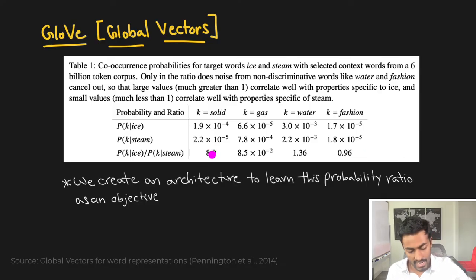What we can see here is that solid has a very high probability ratio and so it is more associated with ice. Gas has a low probability ratio closer to zero and hence it is more associated with steam. And then water and fashion are kind of in the center and they're not really associated with either of these as much. This is exactly what we would want in the embedding space. We want the vector for solid to be closer to ice, we want the vector for gas to be closer to steam, but we don't want water to be closer to ice or steam, nor do we want something like fashion to be closer to ice or steam. And because this is exactly what we want, we would build a neural net architecture that optimizes this probability ratio objective. So this is just another way to learn word representations.